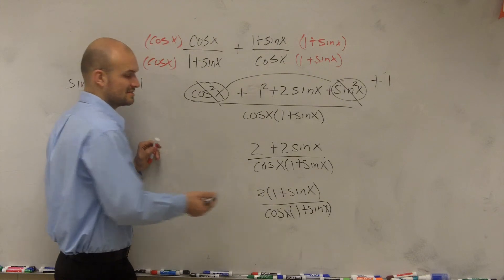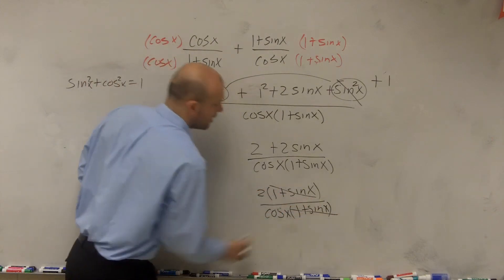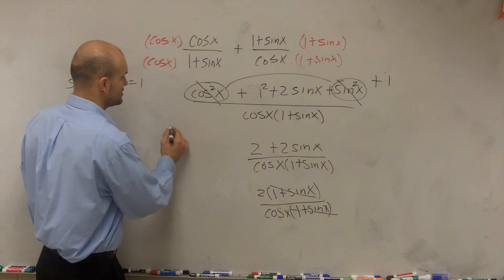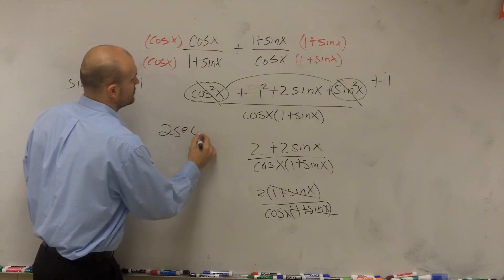Then these two terms are exactly the same, so they are going to divide to 1, and I'm left with 2 over cosine, which is 2 secant of x.